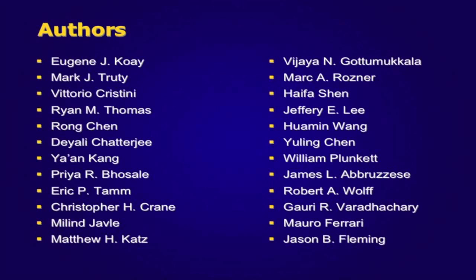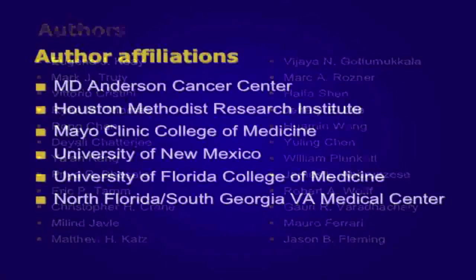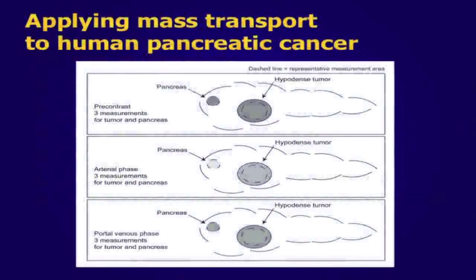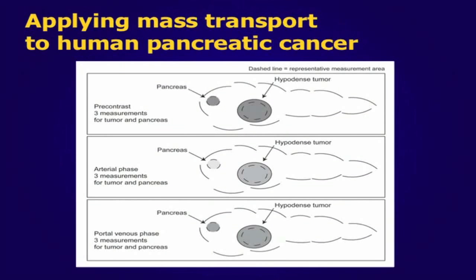Our objective is to understand the delivery or transport of gemcitabine to pancreatic cancer cells in humans. To describe the drug delivery process, we developed a way to quantify the transport properties of individual human tumors from routine CT scans, and correlated these transport properties with drug delivery in a novel clinical trial. The CT analysis involved taking direct measurements of the changes in density due to the intravasation and extravasation of iodine contrast during routine CT scans.